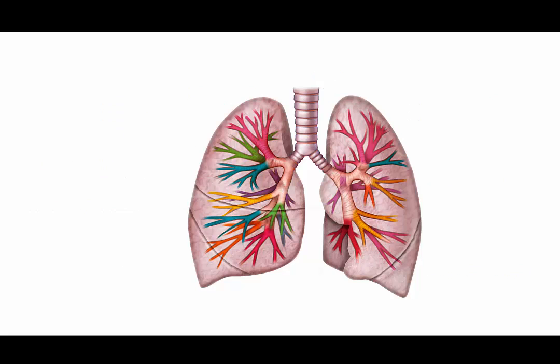From there, the bronchi can be divided into bronchopulmonary segments. These segments are each supplied by their own branch of the pulmonary artery, and therefore each segment is a discrete unit which can be surgically resected, if need be, without affecting its neighboring segments.